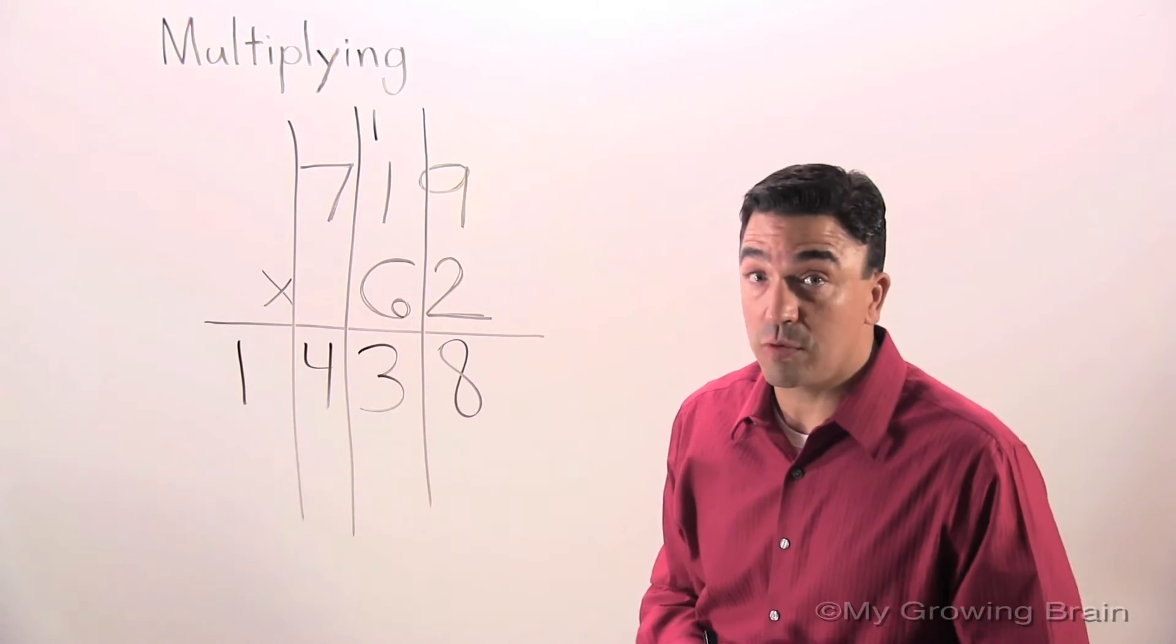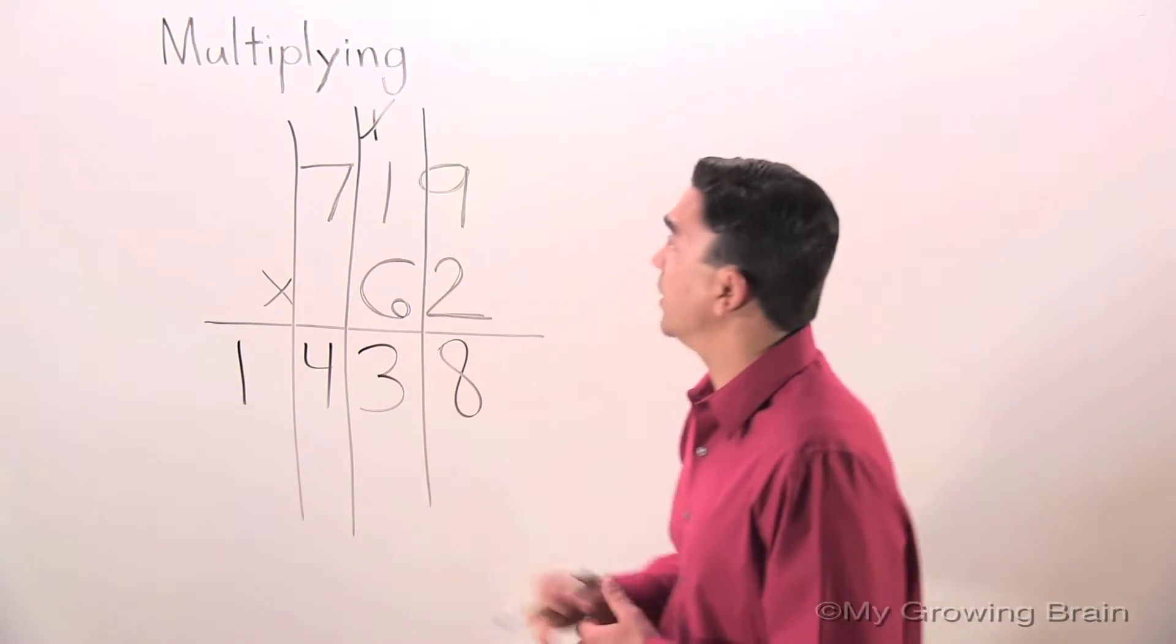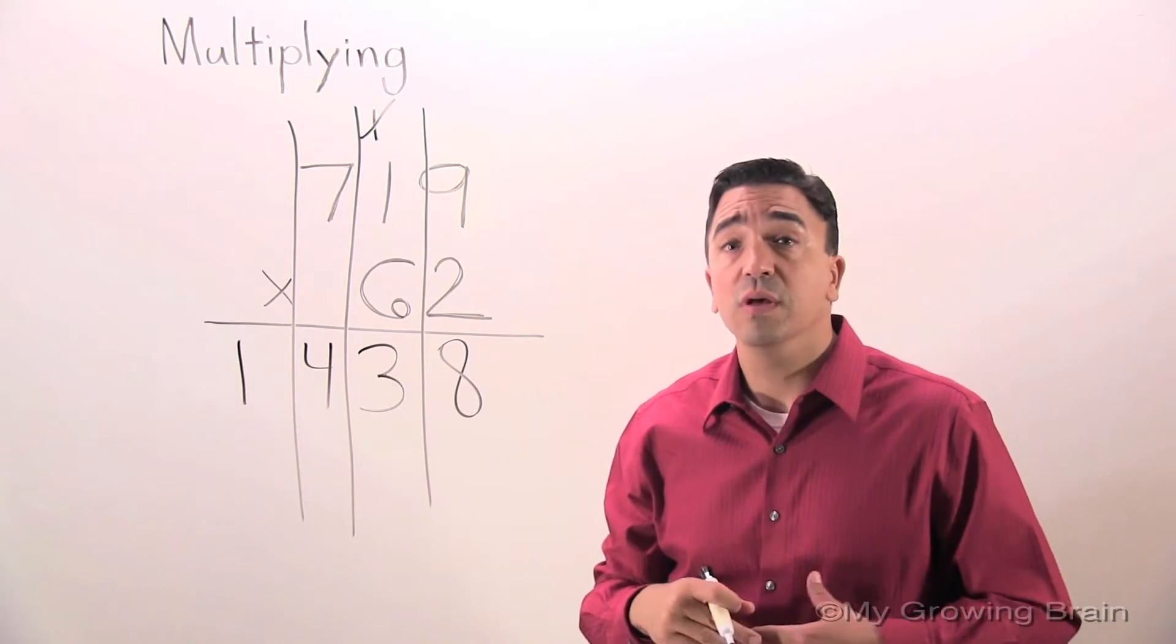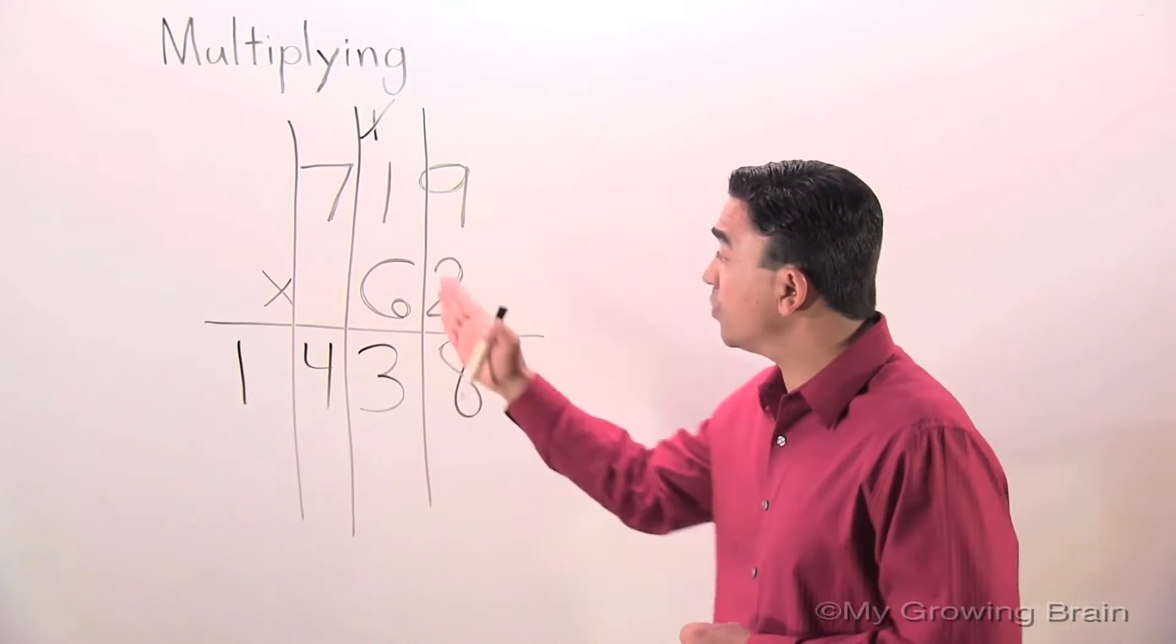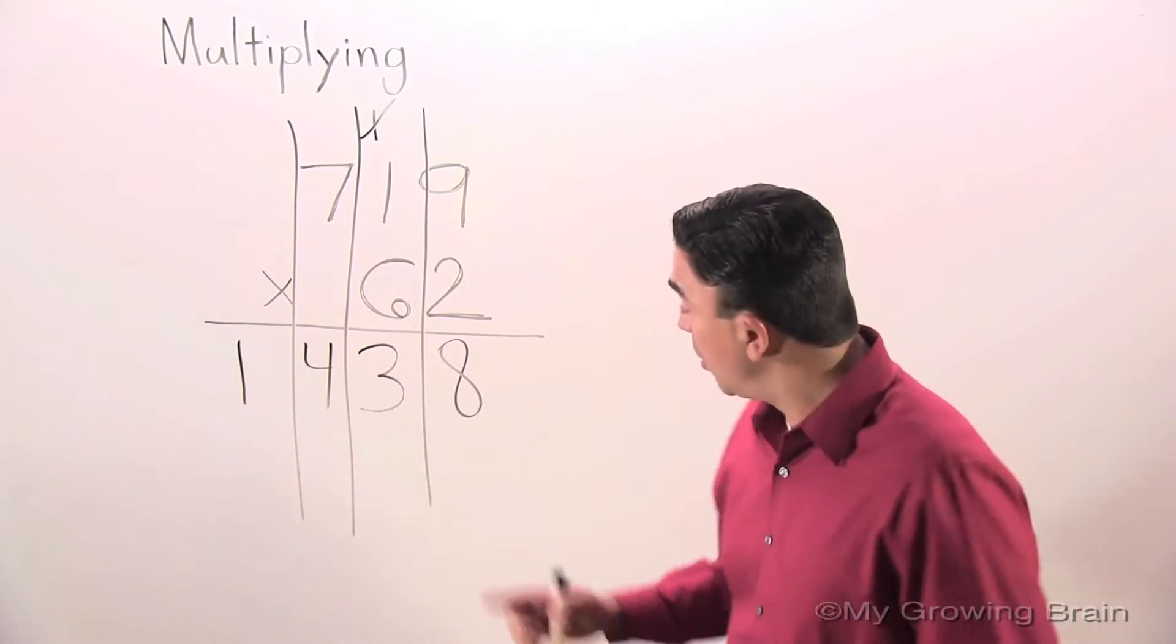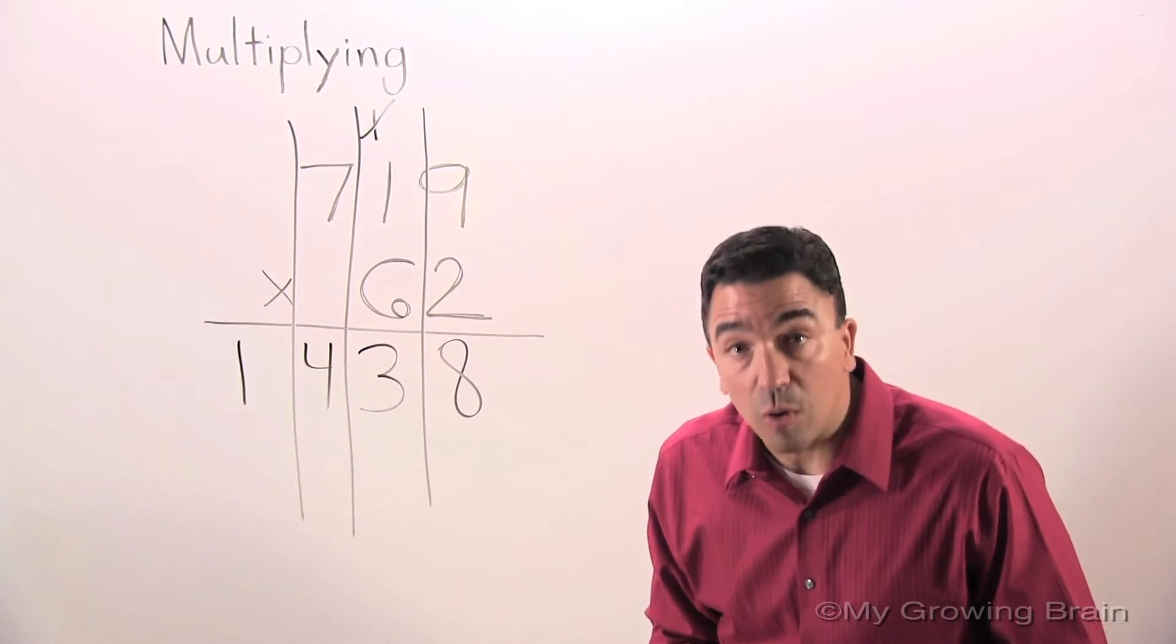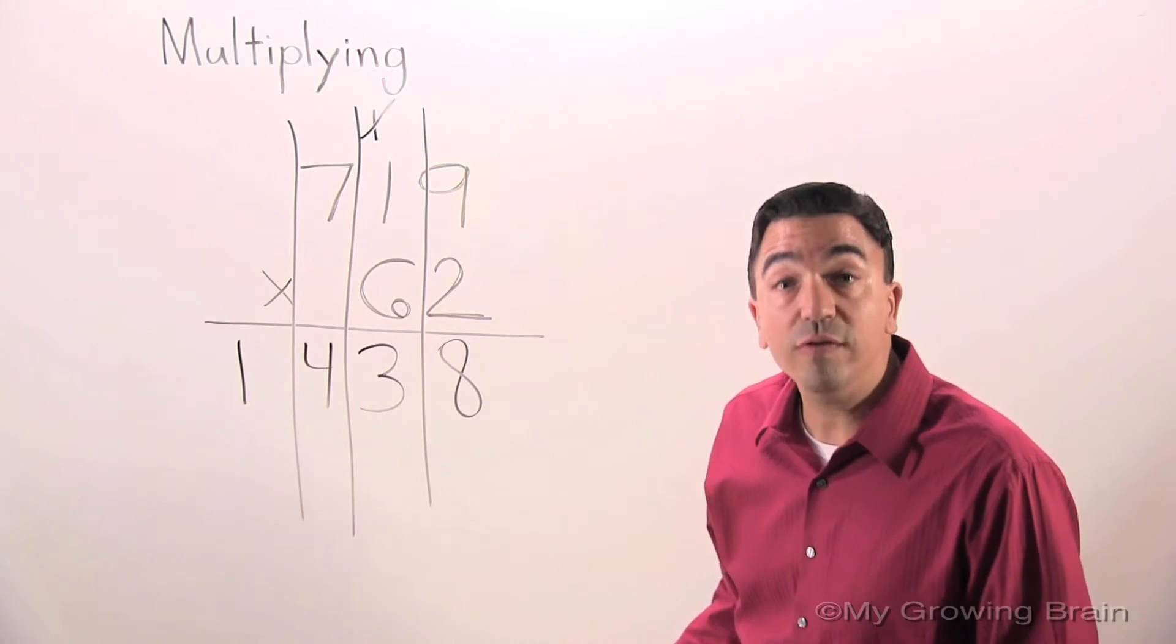A couple things I want to remind you before we do that. One, we want to eliminate the one because we don't want it to interfere with our problem at all. The second thing is since we're multiplying the six in the tens place, we need to put a zero as our placeholder in the ones place.